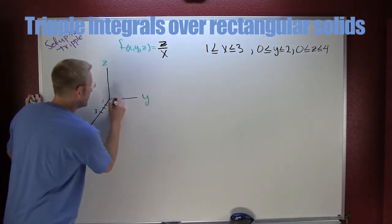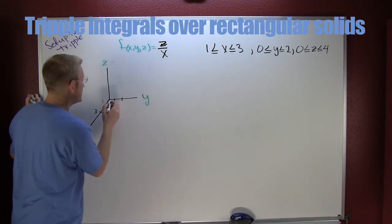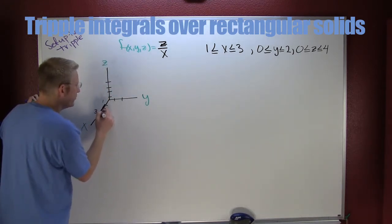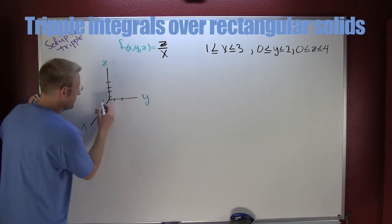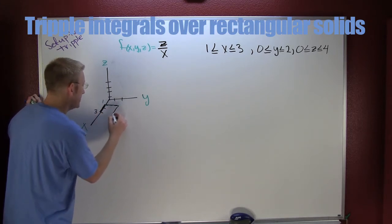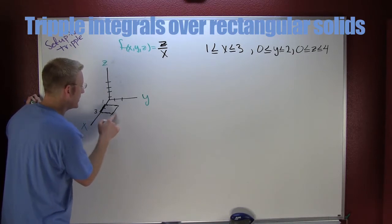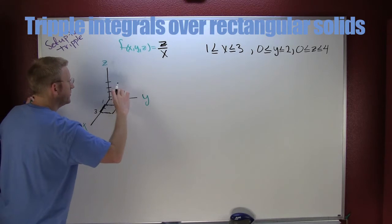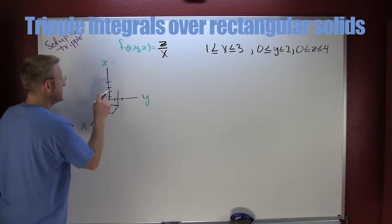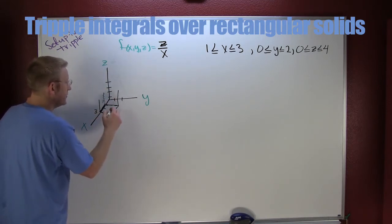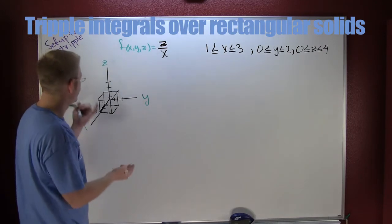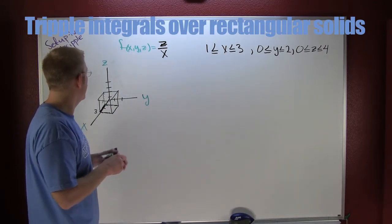My y is going from 0 to 2, and my z is going from 0 to 4. So if I'm going to draw this thing, my x's are in between 1 and 3. I go out 2 units in the y direction, and then I go up 4 in my z. Looks like I have a nice, friendly, and convenient prism that I'm integrating over.